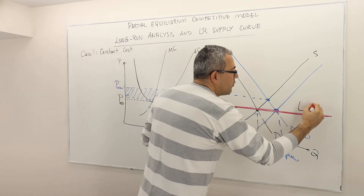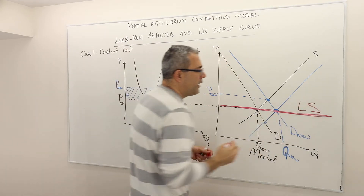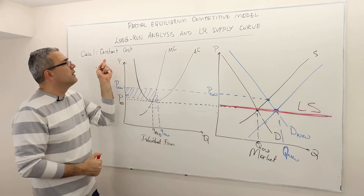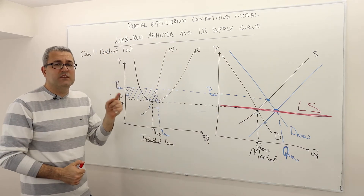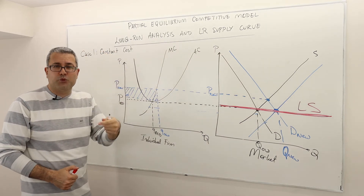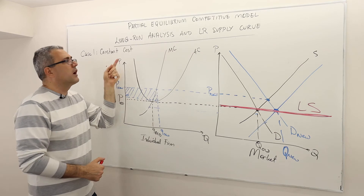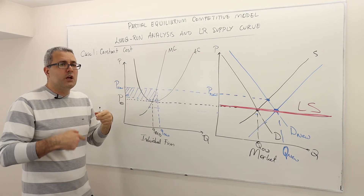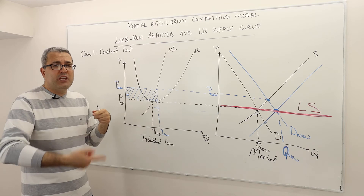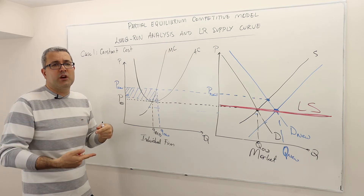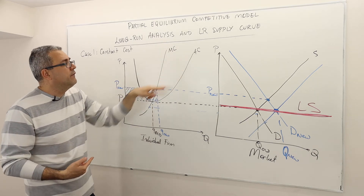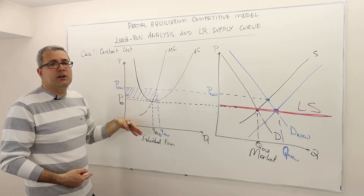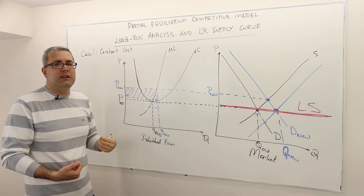This is the long-run supply curve of this market when costs — that is, input prices — are constant, meaning new firms will not change the input prices and hence will not influence the average and marginal cost curves.